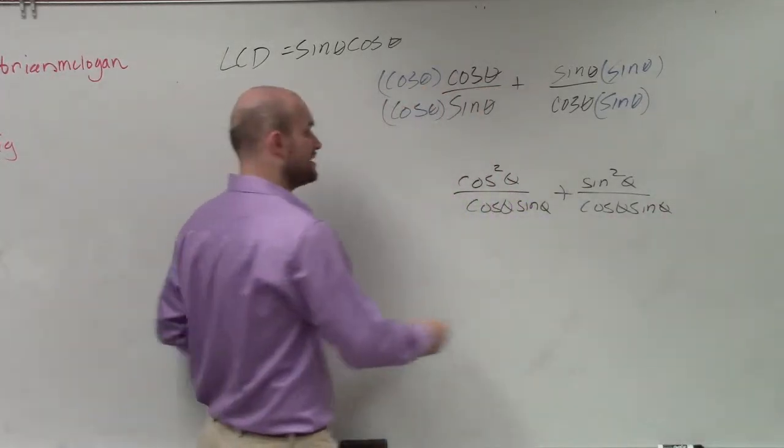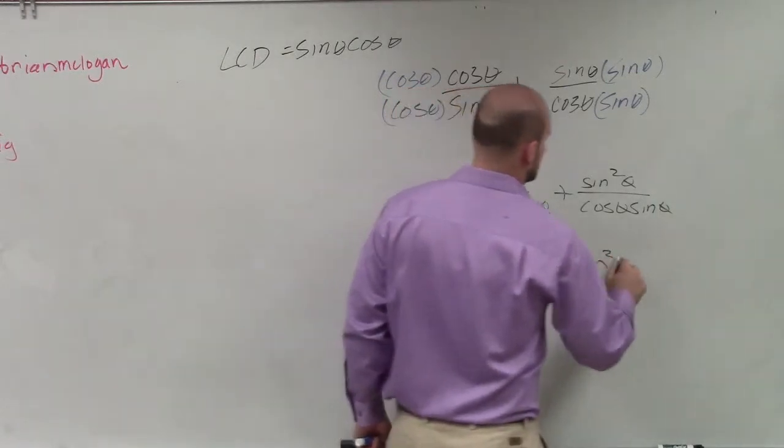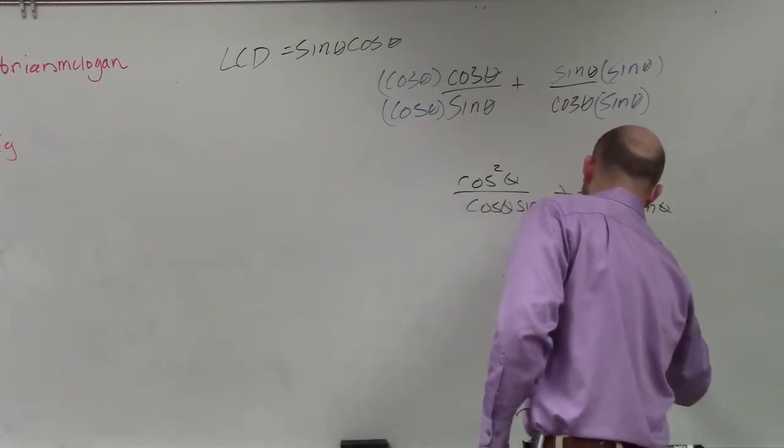We can now, since they have the common denominators, just write this as cosine squared of theta plus sine squared of theta divided by cosine of theta sine of theta.